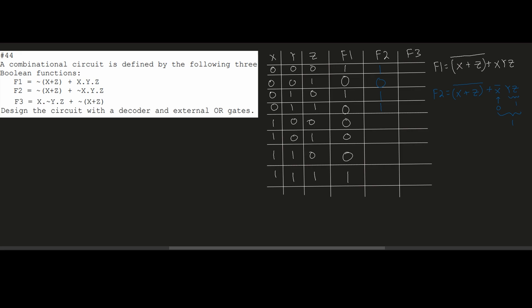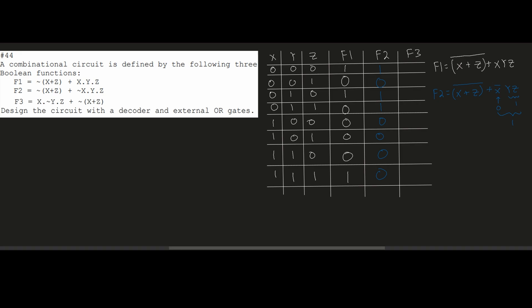For row 1,0,0 and all remaining rows where X is 1: the X0 term requires X to be 0, so that AND term is always zeroed out. Since X is 1, X+Z is always 1, and (X+Z)' is always 0. So all of these remaining rows give 0 for F2.